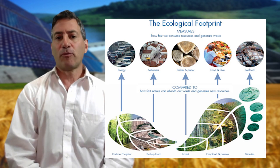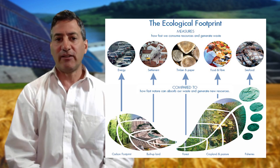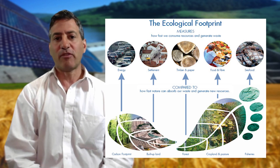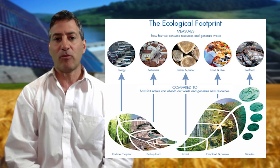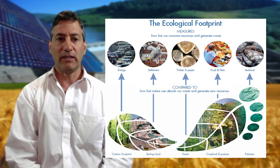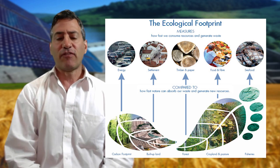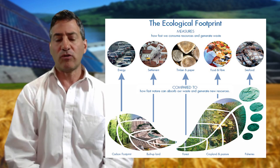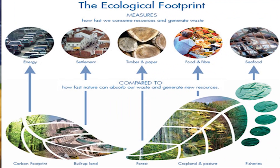Ecological footprint analysis emerged in 1992, developed at the University of British Columbia by Dr. William Rees and Dr. Mathis Wackernagel. As defined by the Global Living Project: it estimates how much of Earth's productive land and sea is used to produce the food, materials, and energy that we consume and to assimilate our wastes.